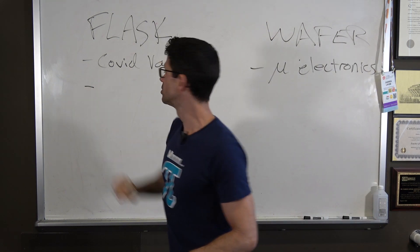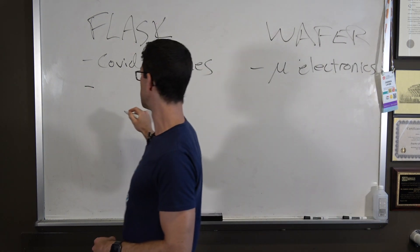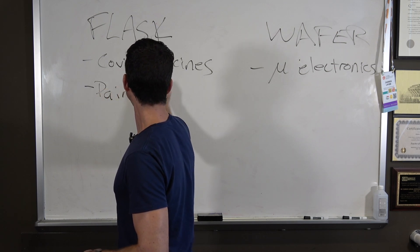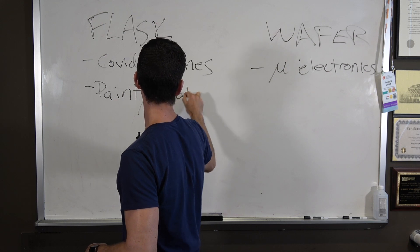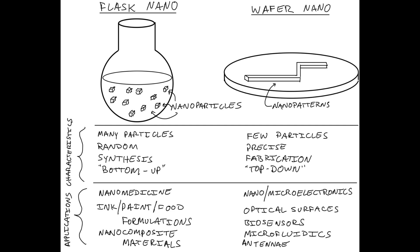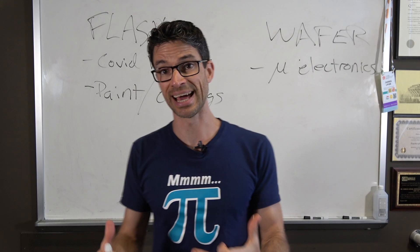Flask nano could be something like paint or coatings — things that have nanoparticles in them, whether they be polymer nanoparticles, particles of dyes, particles of light absorbers, sunblocks, anything that's nano in a dispersion or nano in a solution. That's what we mean by flask nano.